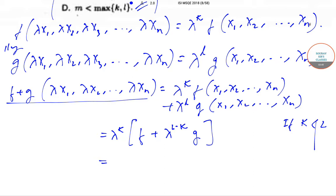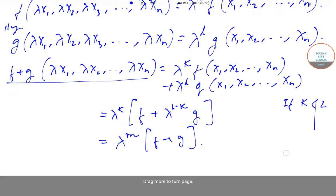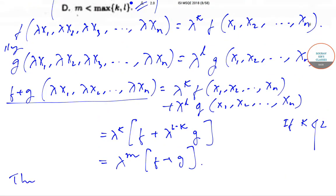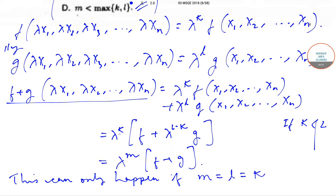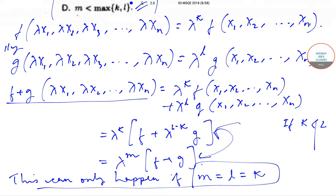Since f plus g is homogeneous of degree m, this is also equal to λᵐ (f + g). So this can only happen if m equals l equals k. In that case, if we put k equal to m, then l minus k is zero, so λ^(l−k) equals λ⁰ which equals 1. So the expression simplifies correctly. This is the only case when it can happen, that is m is equal to l is equal to k, which is nothing but option A.